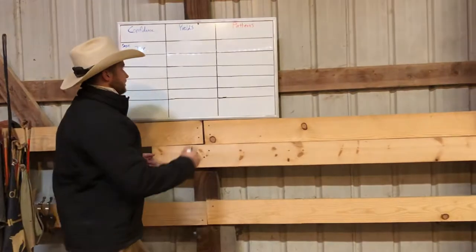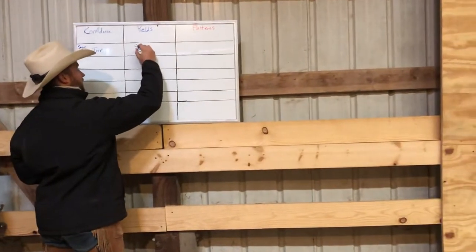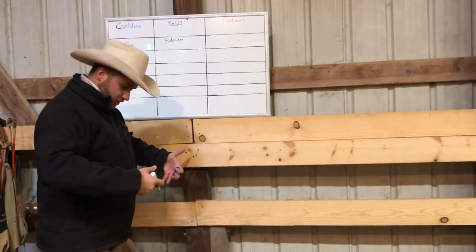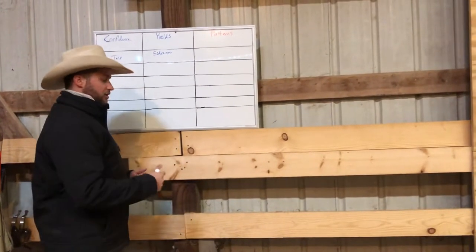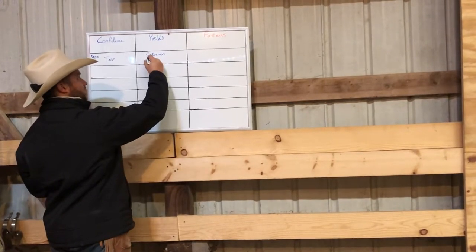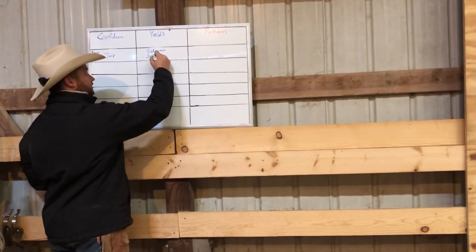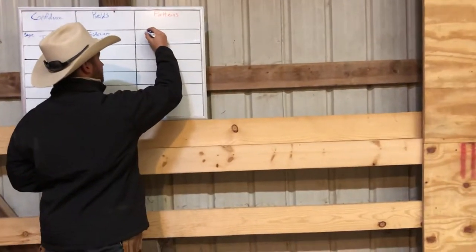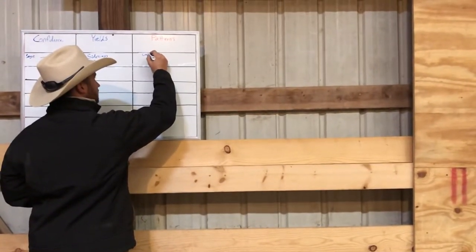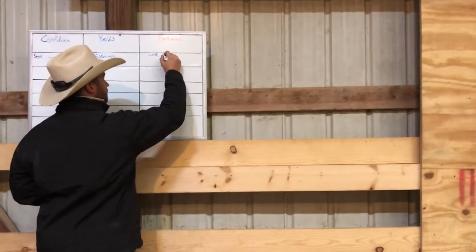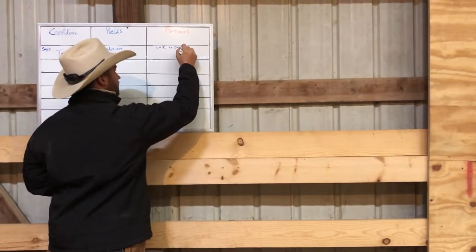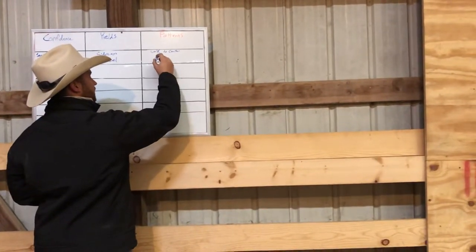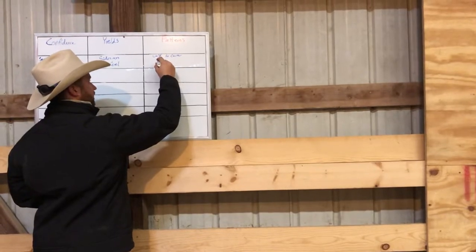Yield-wise, let's say I'm working on my sideways — we've got sideways up here. And then I'm also asking her to bridle up through her canter transition, so we're also working on soft feel. And for pattern-wise, that would be a walk-to-canter pattern — so the transitions we're working on — and then maybe I'm also working on circles.